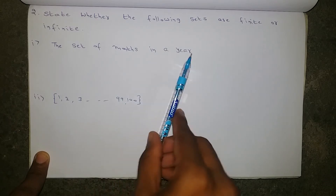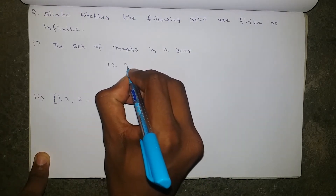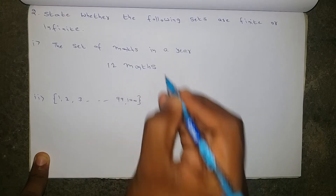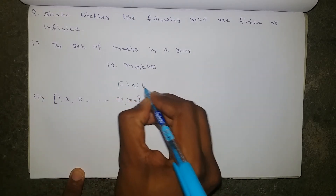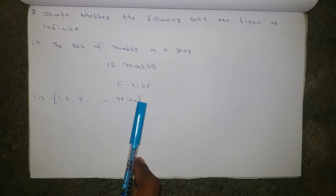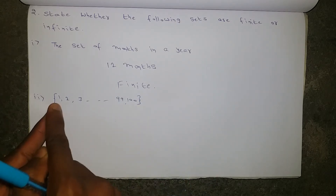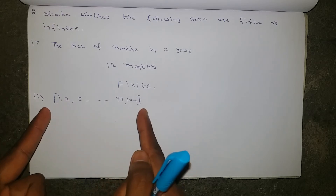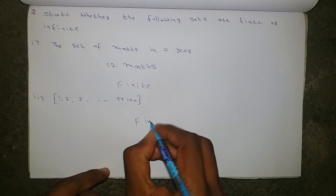First question: the set of months in a year. We know very well that a year contains only 12 months — 12 is a countable thing, so this set is finite. Second one: the set {1, 2, 3, 4, ... up to 100}. These numbers are fixed, starting from 1 to 100, so there are clearly only 100 numbers. This is a finite set.